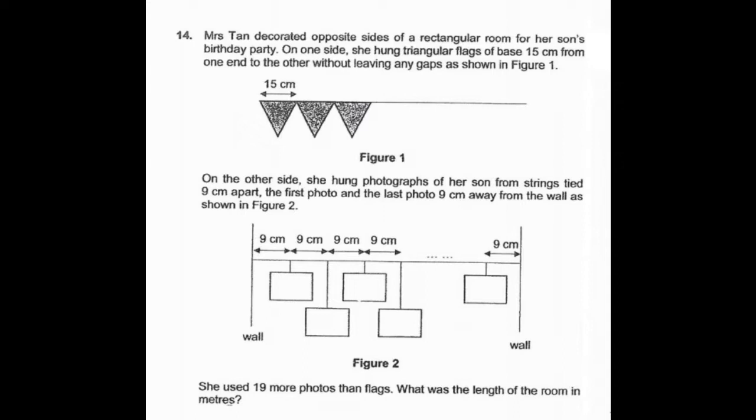Mrs. Tan decorated opposite sides of a rectangular room for her son's birthday party. On one side, she hung triangular flags of base 15 cm from one end to the other without leaving any gaps as shown in figure 1.